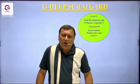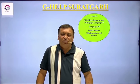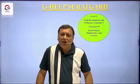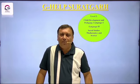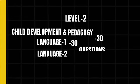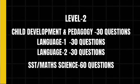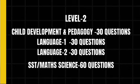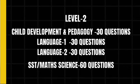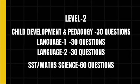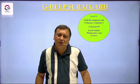For Level 2, there are four sections that appear in BSTC. The first section has 30 questions on Child Development and Pedagogy, the second is Language 1, and the third is Language 2. For the fourth section, which is your subject area such as Math and Pedagogy, you will be given 60 questions from your subject.